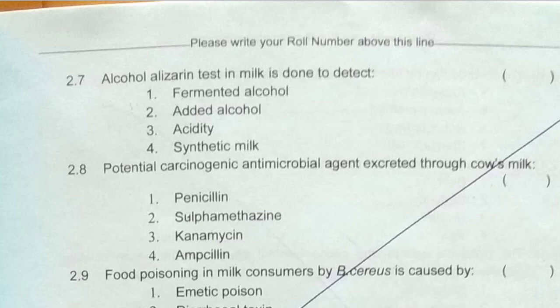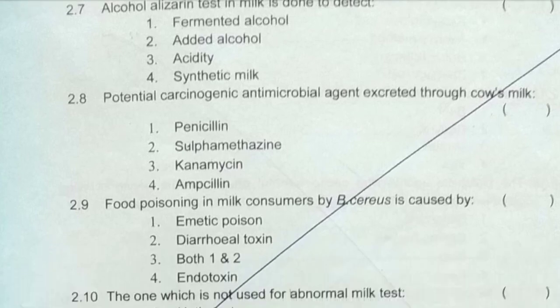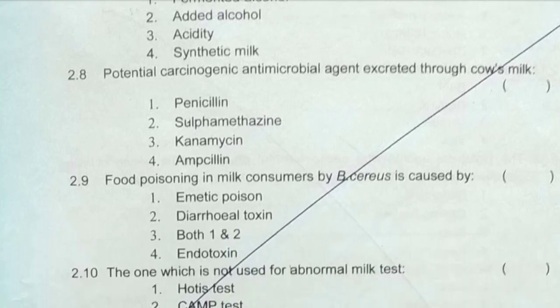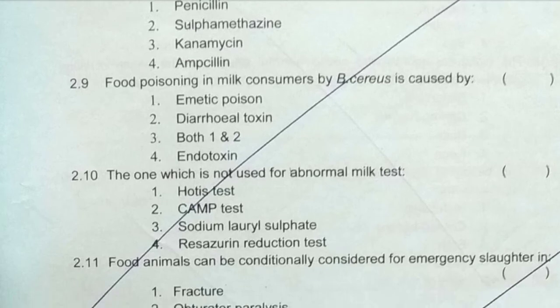The alcohol alizarin test helps detect acidity in milk. Next question: potential carcinogenic antimicrobial agent excreted through cow's milk — the answer is penicillin.